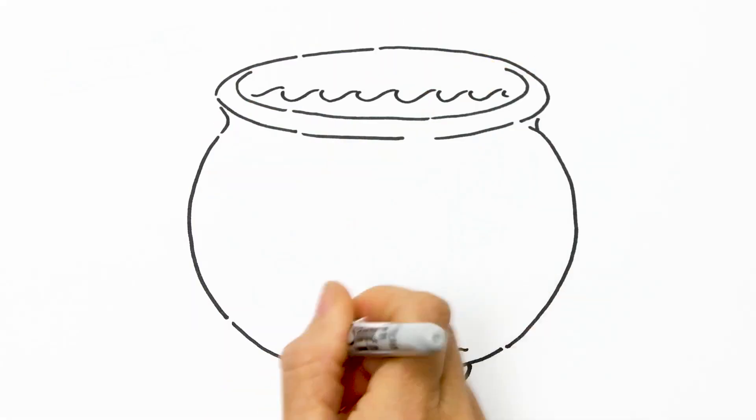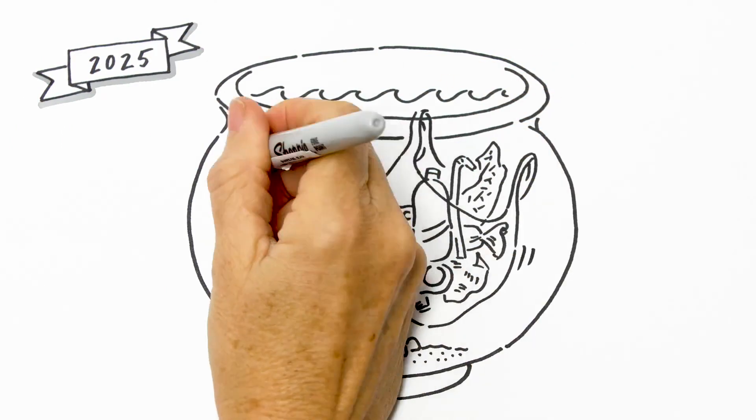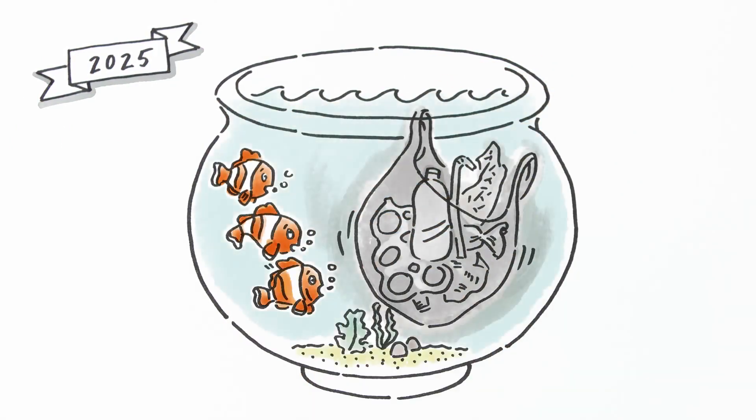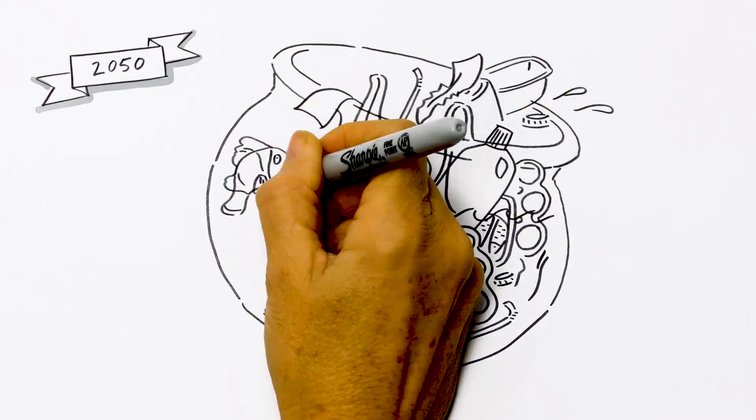The World Economic Forum estimates that by 2025 there will be one tonne of plastic in the sea for every three tonnes of fish and, terrifyingly, by 2050 there will be more plastic in the ocean than fish.